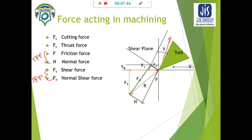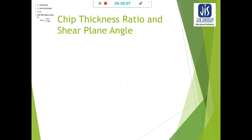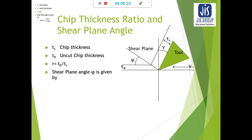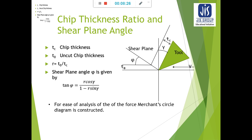From this figure we can see two more angles. The angle between the resultant R and the normal force N is known as beta — the friction angle. The shear plane angle phi has been discussed earlier. We know tc is the chip thickness after cutting, t0 is the uncut chip thickness, and the chip thickness ratio and shear plane angle have already been described in the last class.